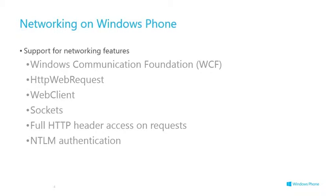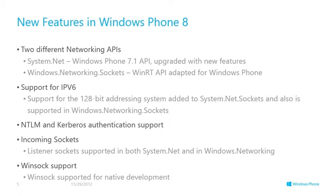The new features in Windows Phone 8: we've now got two different sockets APIs. System.Net, which we've been using in Windows Phone 7.1, is still there but upgraded with new features — notably listener sockets. We've also got the Windows RT API: Windows.Networking.Sockets is in there as an alternative, so if you're doing cross-platform between Windows Phone 8 and Windows 8 you can share a lot of code. Also support for IP version 6.